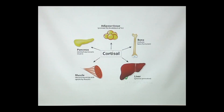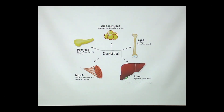The next question is: what does cortisol do? Cortisol has many different effects on your body — these are just a few of them. One example is that it decreases bone formation, so enough cortisol can actually weaken your bones. In the liver, it stimulates release of glucose. In the muscle, it decreases amino acid uptake.